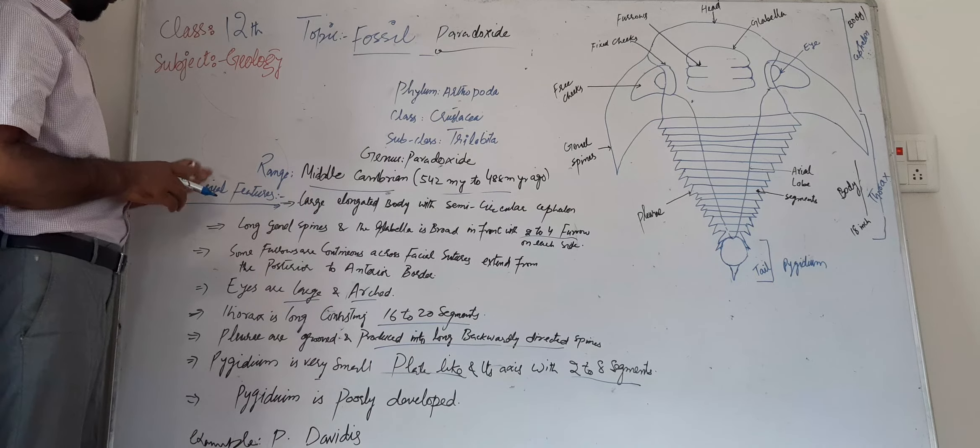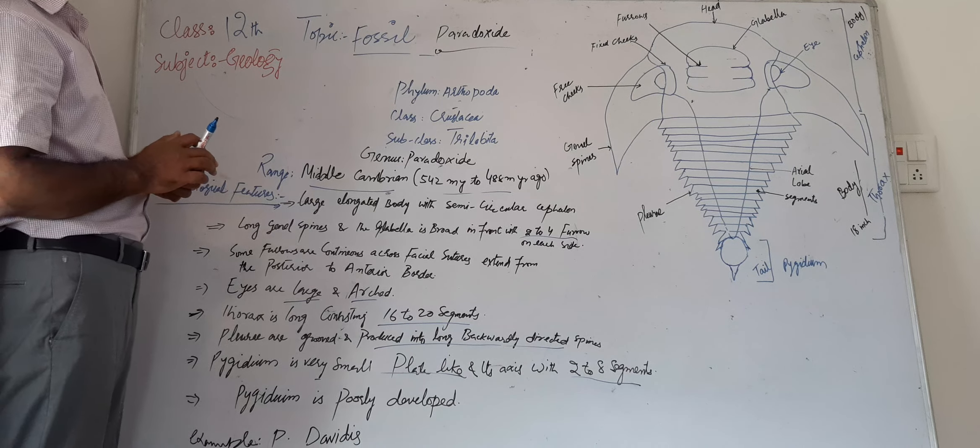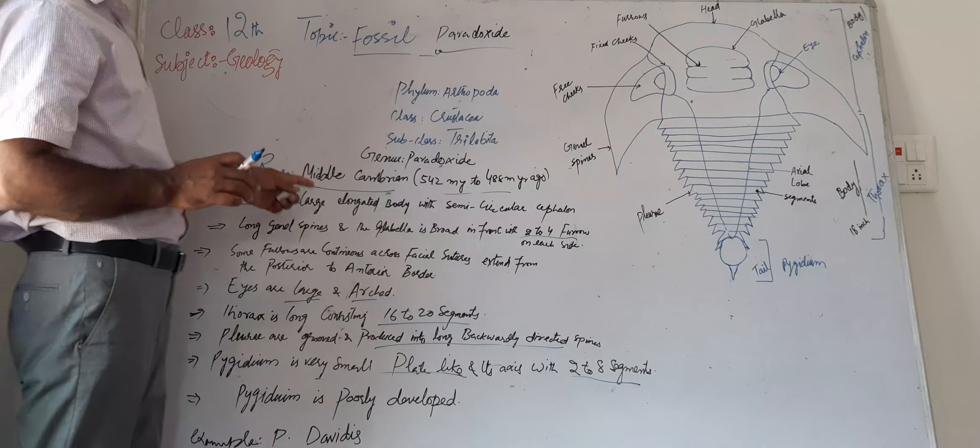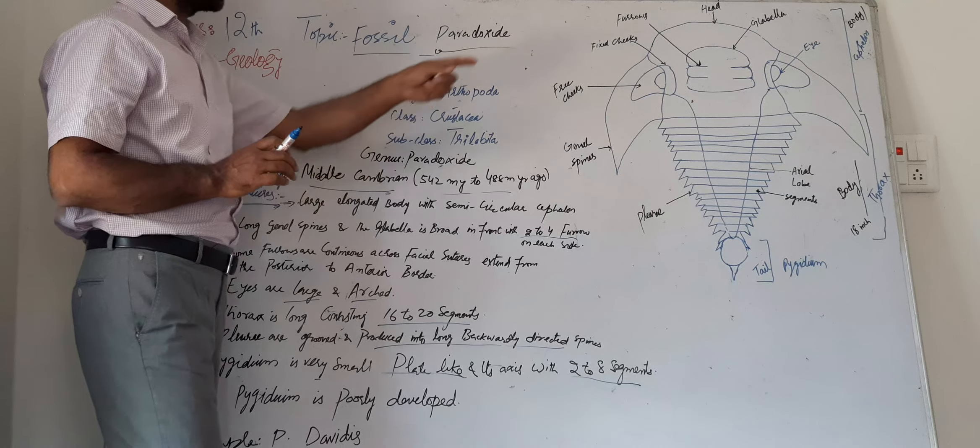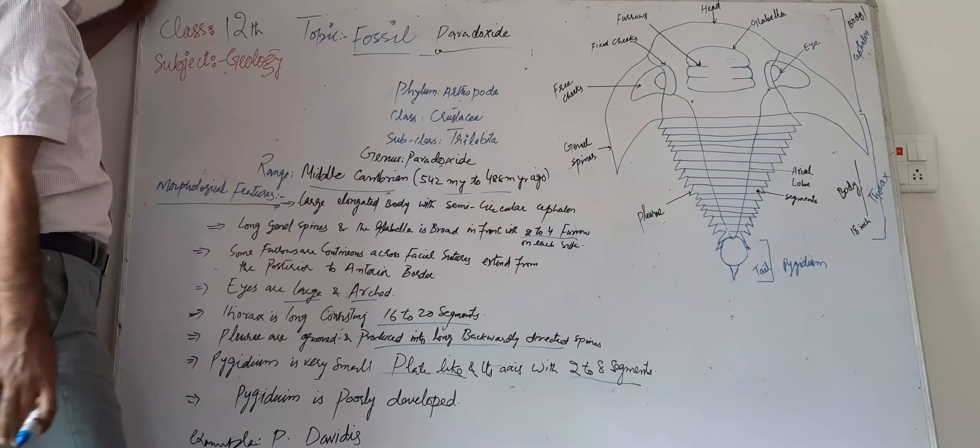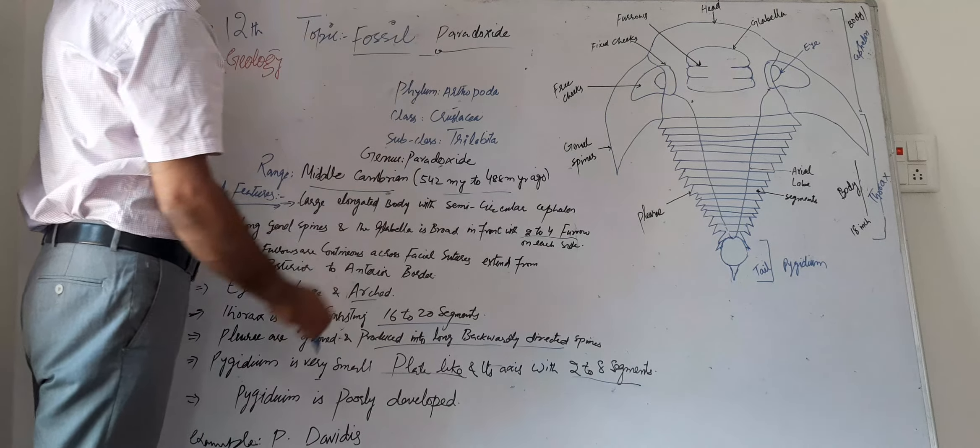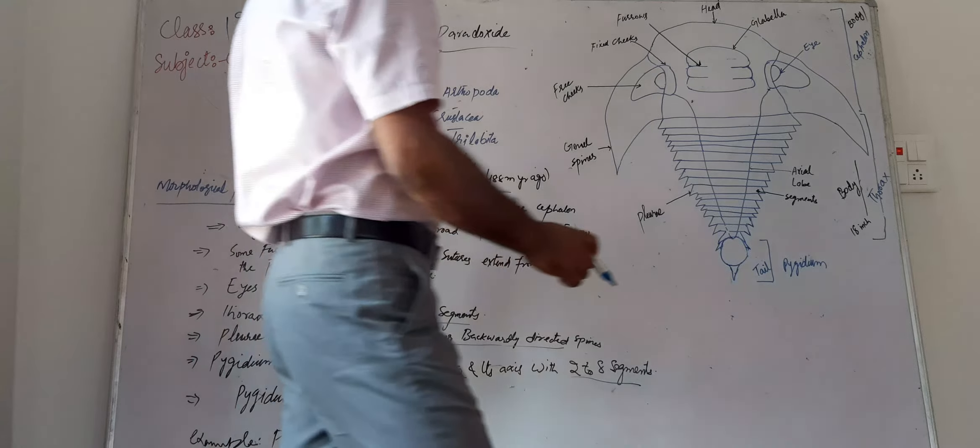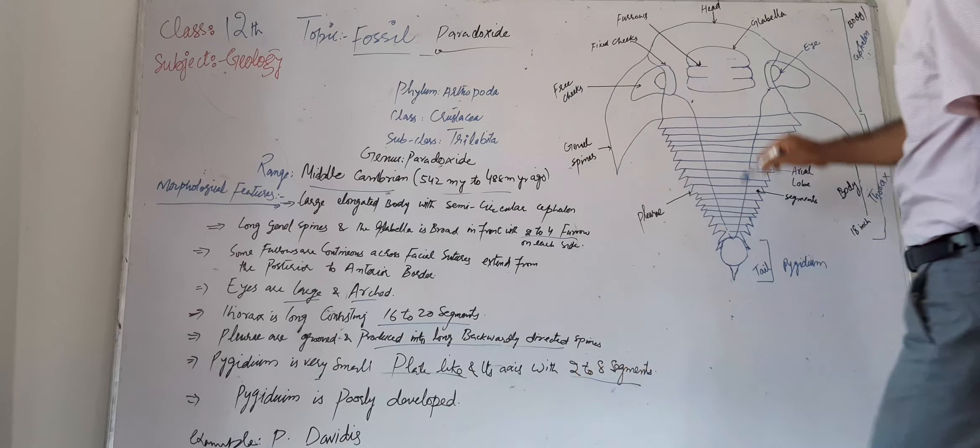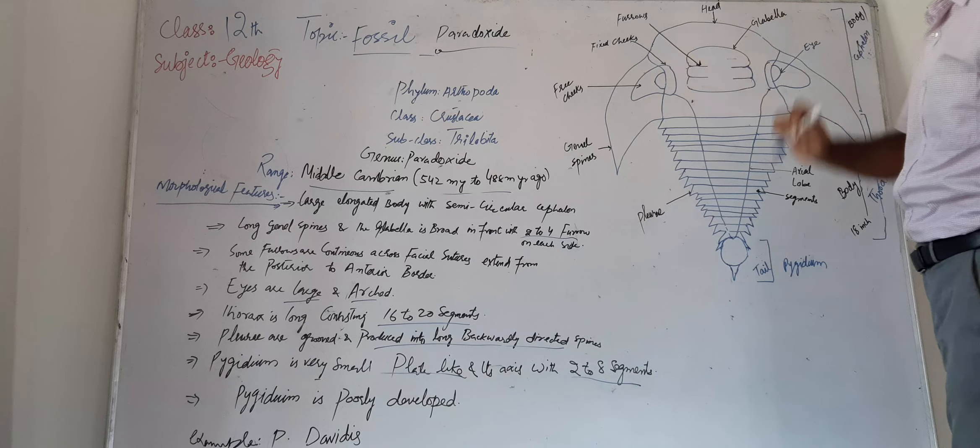When we see the morphological features of this fossil Paradoxides, it has a large elongated body with a semicircular cephalon in its head. This is the long elongated body with semicircular cephalon.